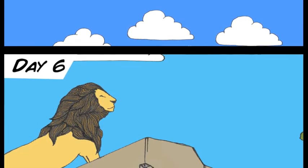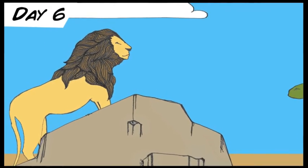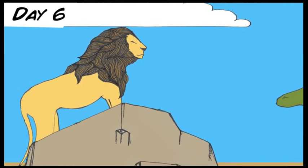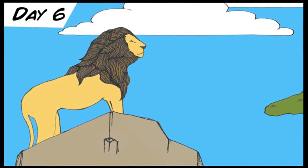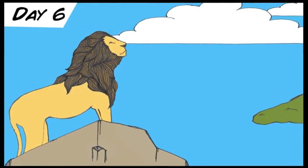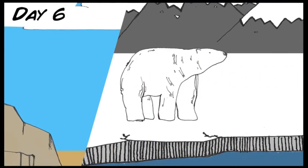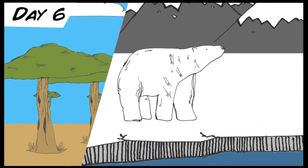Then God said, Let the earth produce every sort of animal, each producing offspring of the same kind. Livestock, small animals that scurry along the ground, and wild animals. And that is what happened. And God saw that it was good.